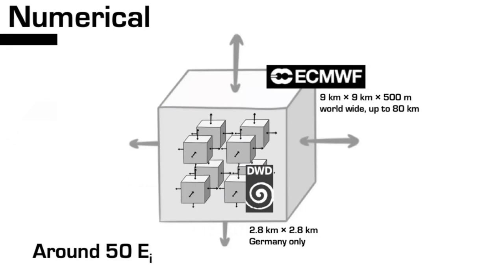You can compose these models. The ECMWF (European Center for Medium-Range Weather Forecasting) runs a worldwide weather model at 9×9 km horizontal resolution and 500-meter vertical resolution up to 80 km. The German weather service (DWD) has a higher-resolution model but only for Germany, using the more coarse-grained ECMWF model as boundary conditions and as a means of initializing data for the finer-grained model. Weather models calculate around 50 properties per volume, so even large computers can be fully utilized with this approach.